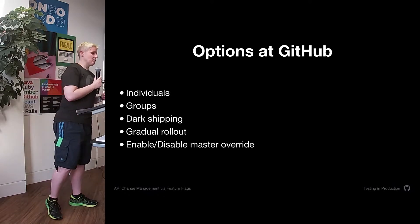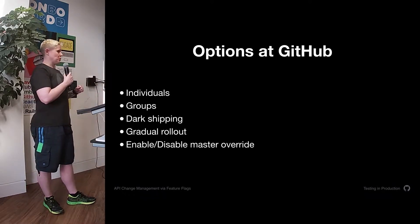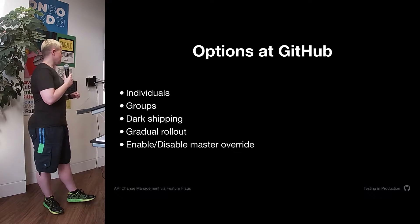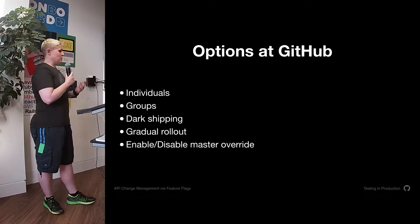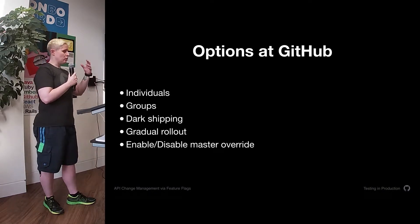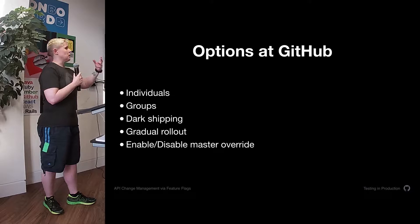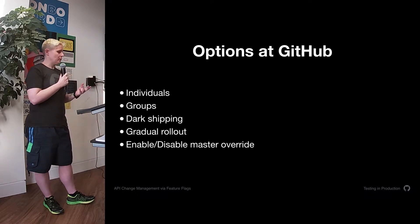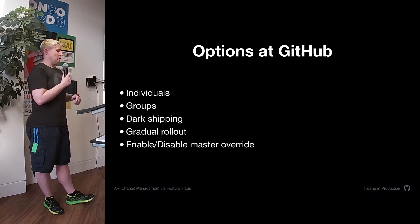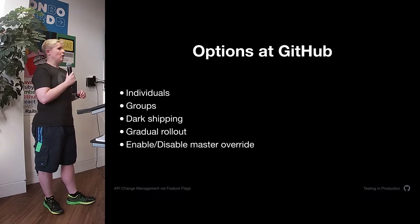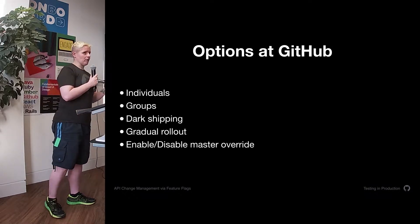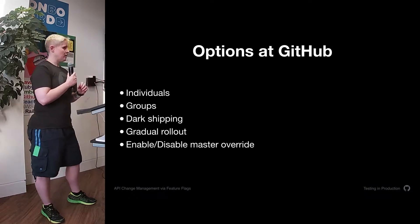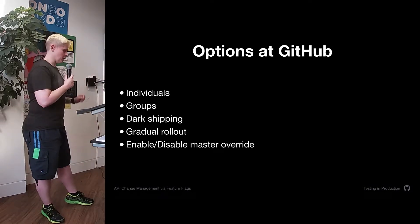We also have an enable/disable master override. The enable is for when you go to 95% or you've got a group and you're simply giving it to everybody. And for disabling — it's like, everything's going red, everybody's getting paged, let's turn this thing off.